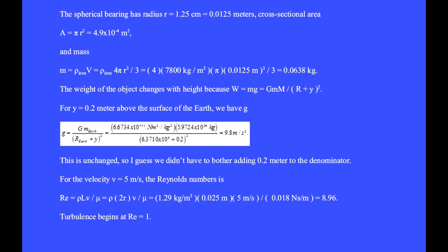The spherical bearing has radius r equal 1.25 centimeter equals 0.0125 meters. Cross-sectional area A equals pi r squared equals 4.9 times 10 to the minus 4 square meters.